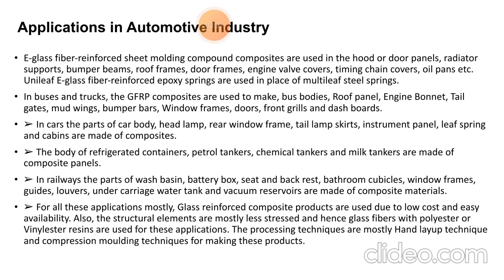In cars, many parts are also made from composites: headlamps, rear window frames, tail lamps, instrument panels, leaf springs, and cabins are made from a variety of composites. The bodies of refrigerator containers, petrol tankers, chemical tankers, and milk tankers are also made from composite panels.